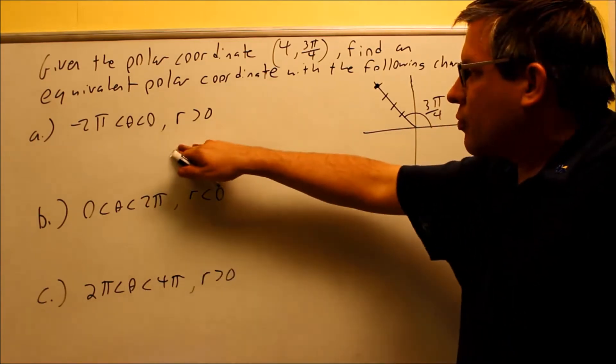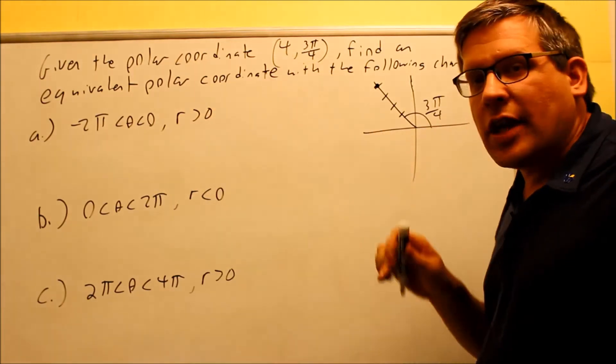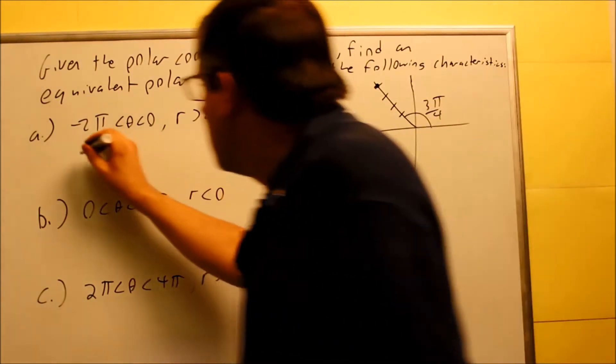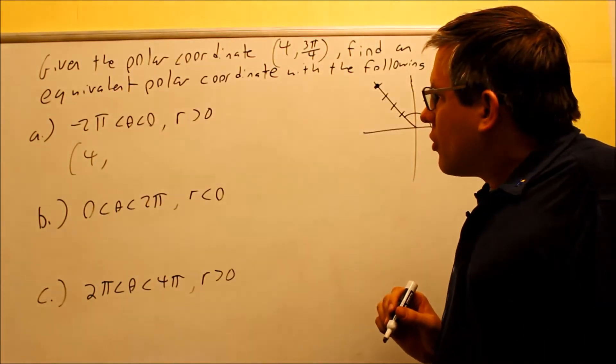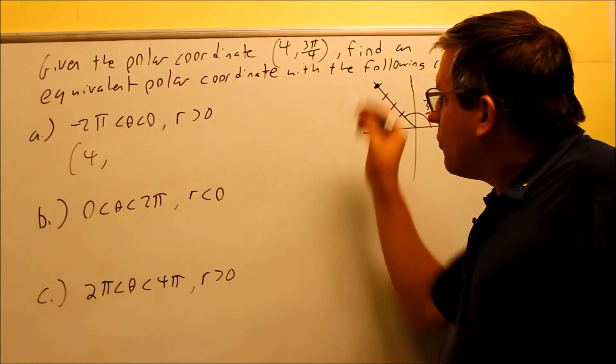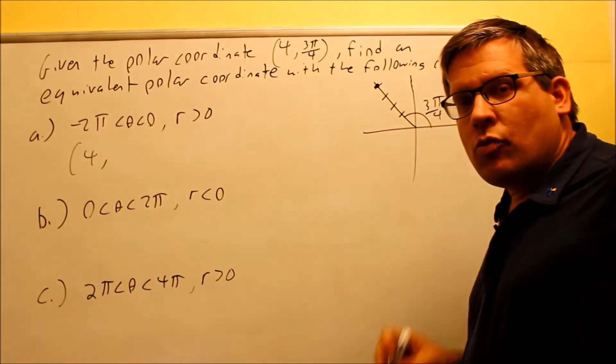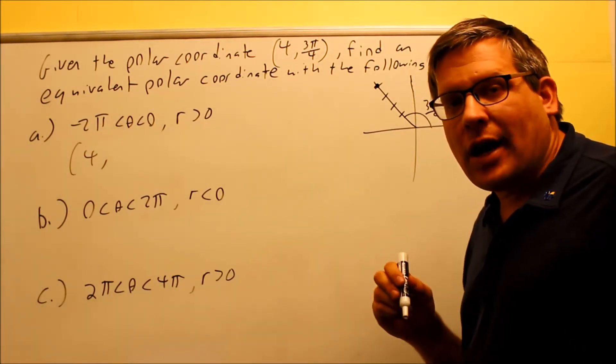When I do this first problem, it's saying that my r needs to be greater than zero. Now, my r that was originally given is already greater than zero, so I'll just keep that as 4. You have a choice here to either add or subtract 2π. If we're not changing the r, we need to use 2π. If we are going to change the sign of the r, then we have to use π.